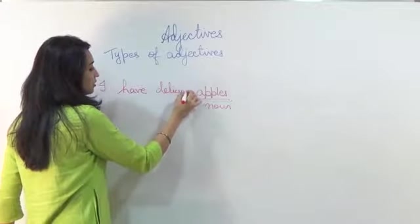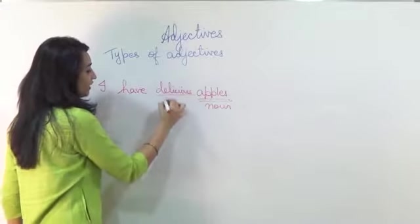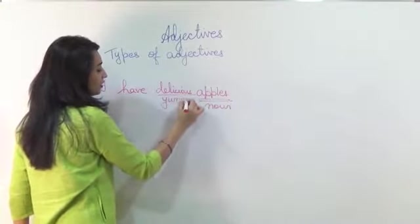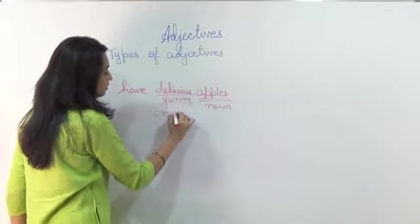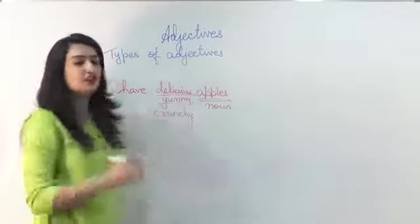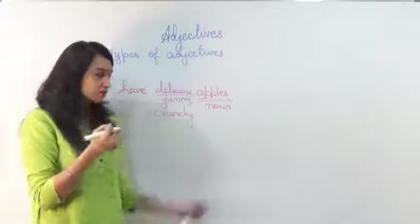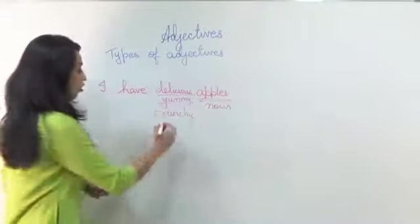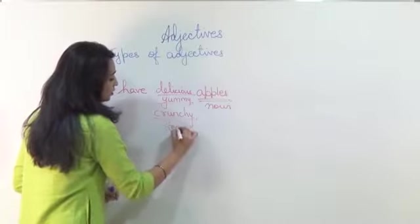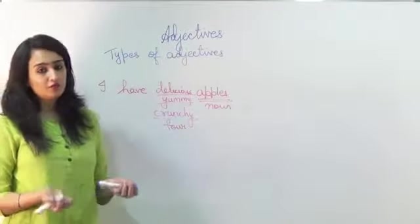I can write delicious, yummy. I can also write crunchy. So you bite, crunch comes, so crunchy. Or I can use the quantitative and I can write four.